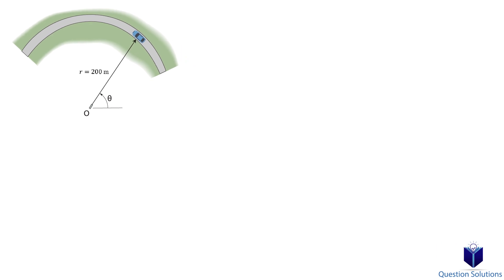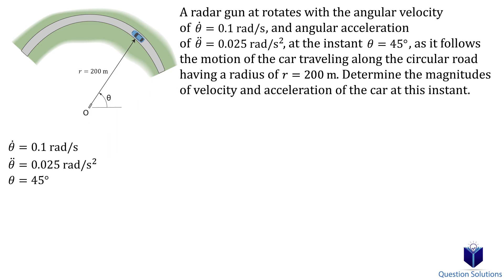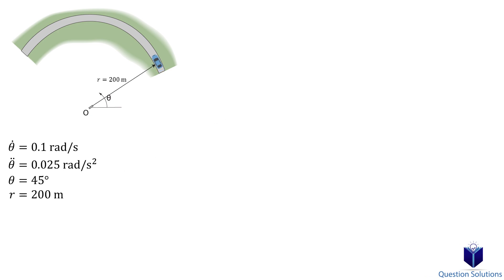Let's go through some examples to look at how to apply these equations. In this question, we are asked to find the magnitudes of velocity and acceleration of the car. We're given the angular velocity, the angular acceleration, and the theta value at which we're trying to find the answers. We also see that r is equal to 200 meters. Since r is a constant, meaning the distance from the origin doesn't change, the first and second derivatives of the radius are zero.